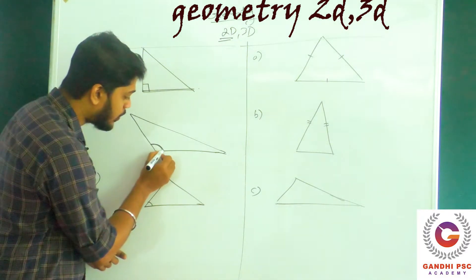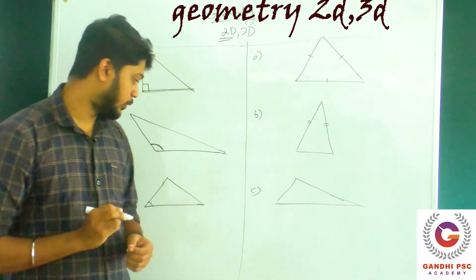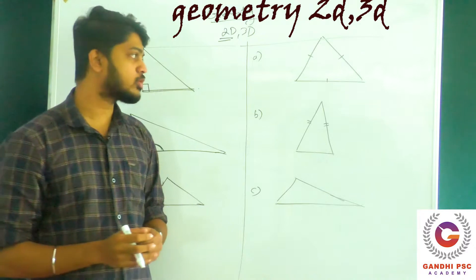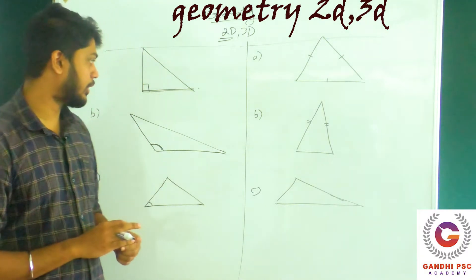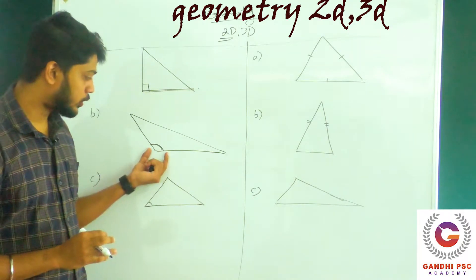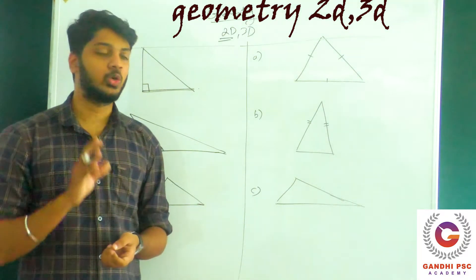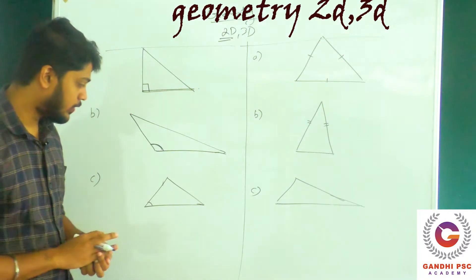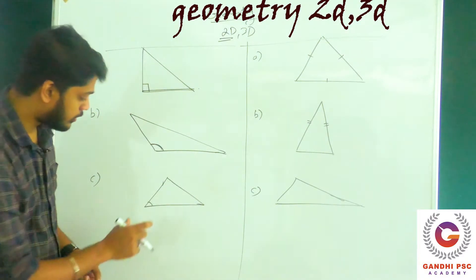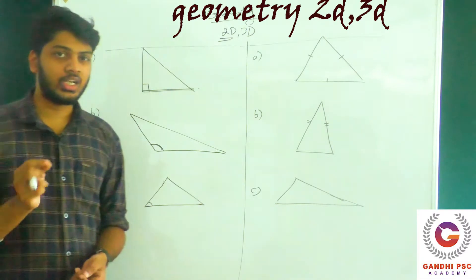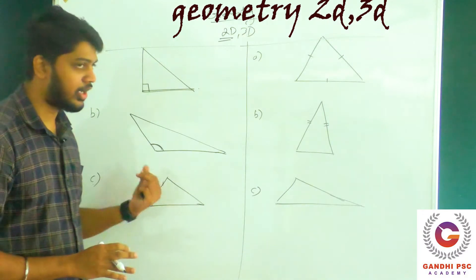That angle is 90 degrees — that is a right triangle. That angle is an obtuse triangle. If we have an obtuse triangle, this is the acute triangle.